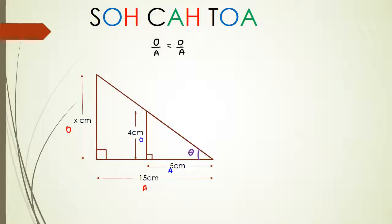So according to my theory, it was basically O over A equals O over A because they're both tan thetas. Which in this case, for the red triangle I'm going to write it first: x divided by the adjacent, which is 15, equals the blue one, which happens to be 4 for the opposite divided by 5, which is the adjacent. So rearranging this, I'm actually going to be getting x equals 15 times 4 divided by 5. And so x equals 12 centimeters. Alright, that's one way of doing it.